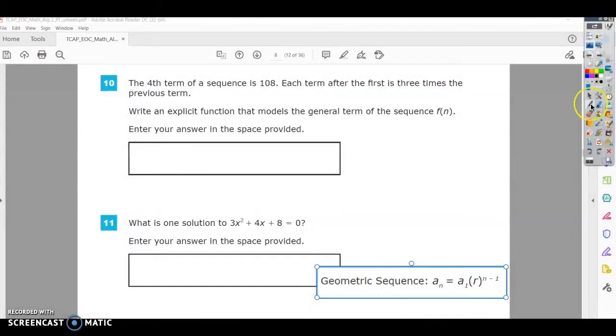This is number 10 on the Algebra 2 practice test. The fourth term of a sequence is 108. Each term after the first is three times the previous term. Write an explicit function that models the general term of the sequence, f of n.